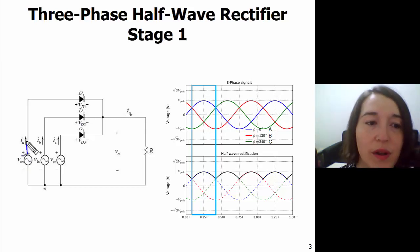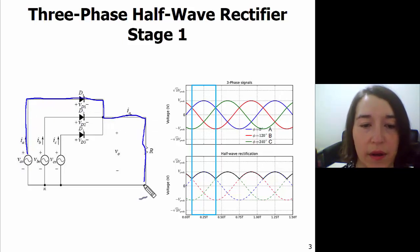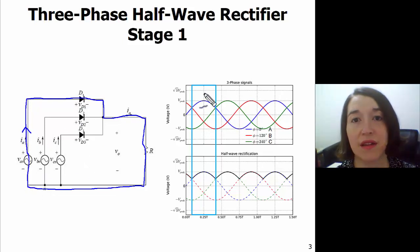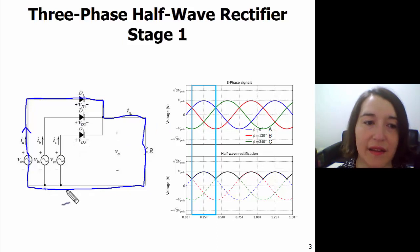The current will go through A here, through our load, and come back through neutral here, and complete the circuit. So during this stage, when A is the highest, this is the current path through our rectifier.